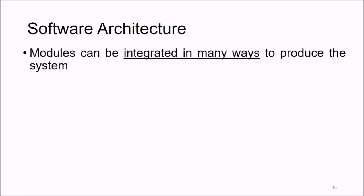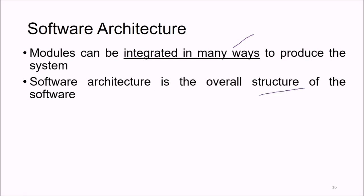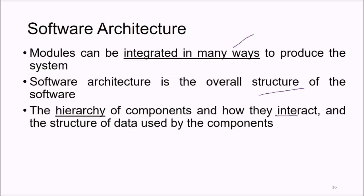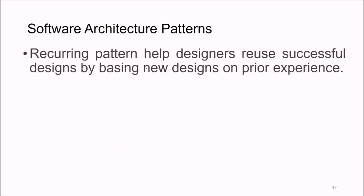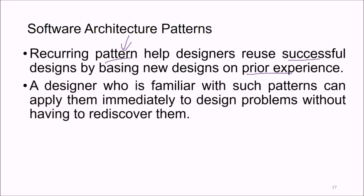Modules can be integrated in many ways to produce the system. Software architecture is the overall structure of the software — the hierarchy of components, how they interact, the structure of data used by components, the use of framework models, and possible reuse of architectural patterns. Software architecture patterns are recurring patterns that help designers reuse successful designs by basing new designs on prior experience. A designer familiar with such patterns can apply them immediately to design problems without reinventing or rediscovering them.